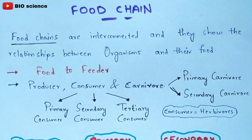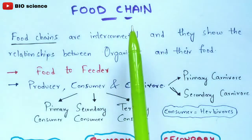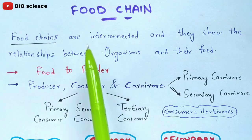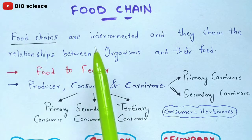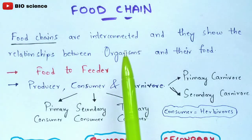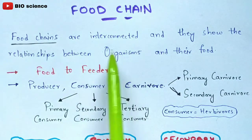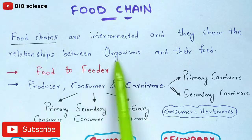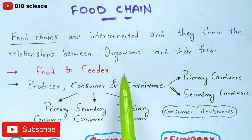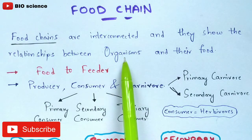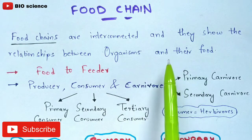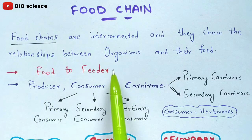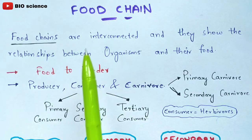In this video I am going to explain about food chain and types of food chains which are present in the ecosystem. Firstly let us discuss about the food chain and then later enter into the topic of types of food chains. Food chains are interconnected and show the relationship between organisms and their foods. Different organisms will feed upon different types of foods and based on that concept, food chains will be constructed.